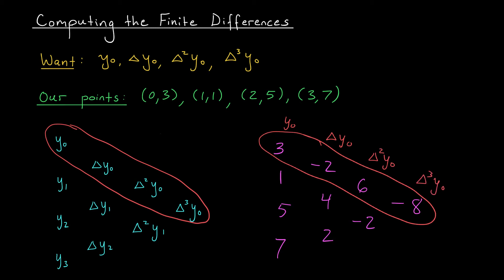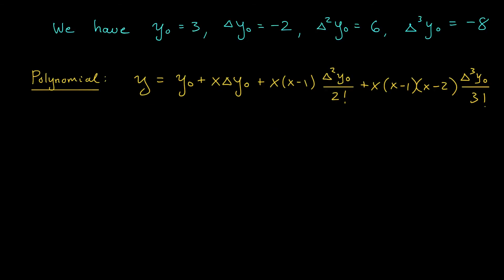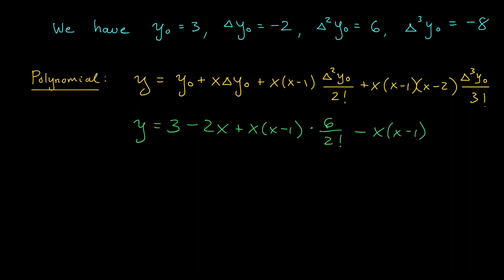Alright folks let's wrap up this problem. We have our y naught term and our next three finite differences, and we're ready to plug those expressions into our polynomial and obtain our interpolating cubic. Starting with our y naught term, we have y is equal to 3. Next we add in our first forward difference minus 2, so that's minus 2x. We add in our next forward difference which is 6, so plus x times x minus 1 times 6 over 2 factorial. And lastly we add in this last forward difference which is minus 8, giving minus x times x minus 1 times x minus 2 times 8 over 3 factorial.